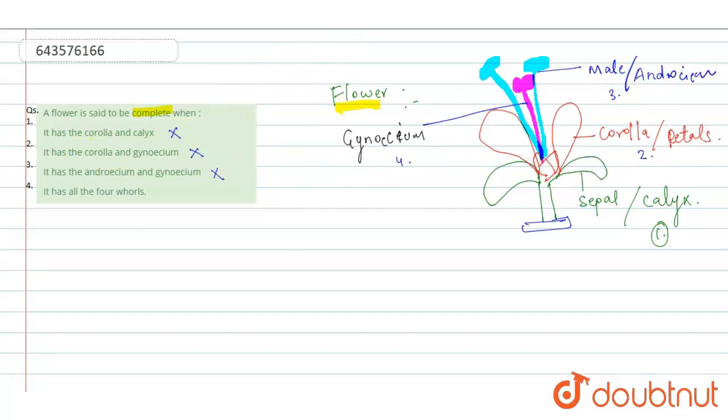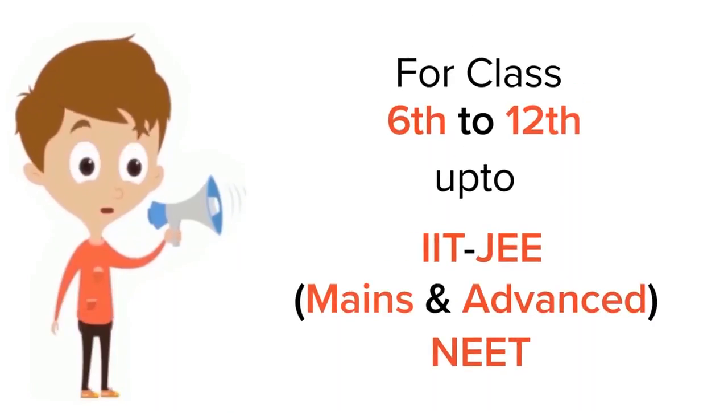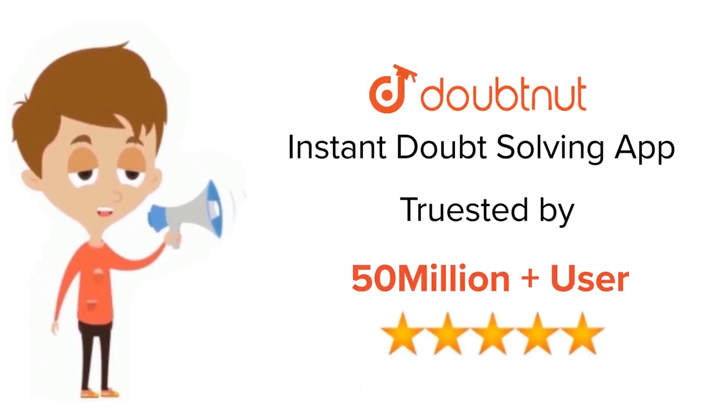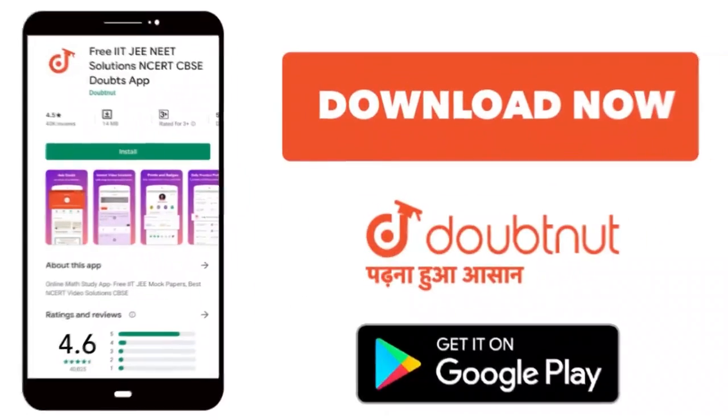So hope this is clear. Correct answer is it has all the four whorls. For class 6 to 12th, IIT, and NEET level, trusted by more than 5 crore students. Download Doubtnut app today.